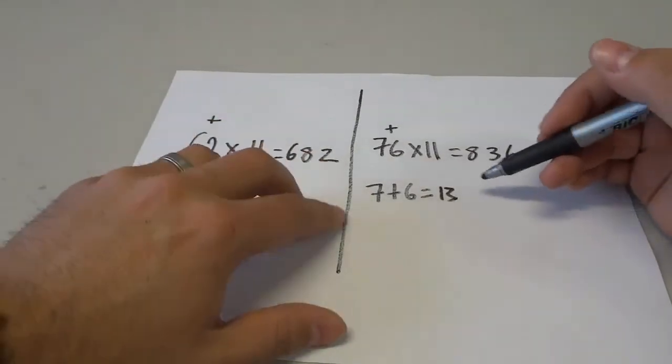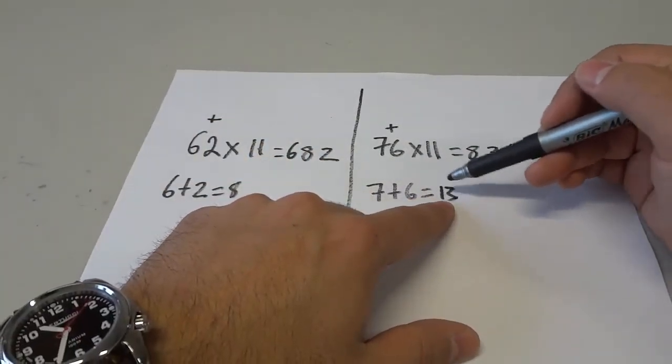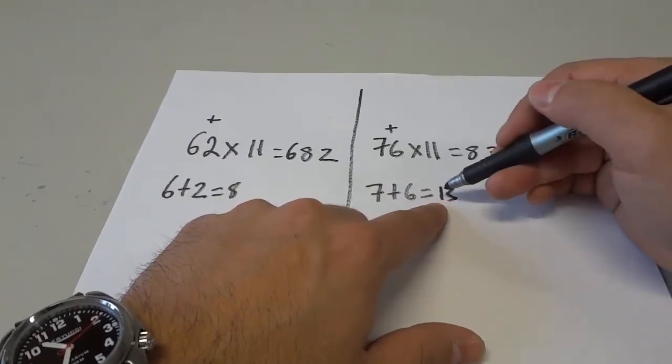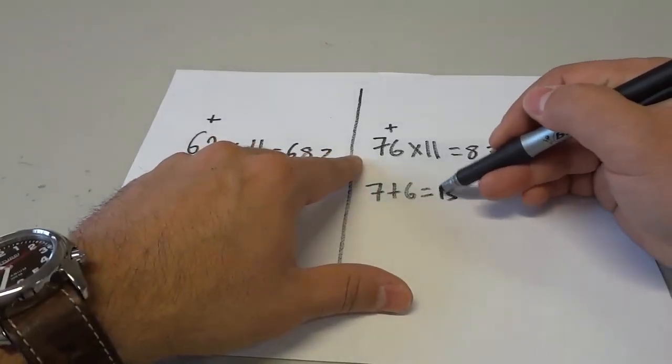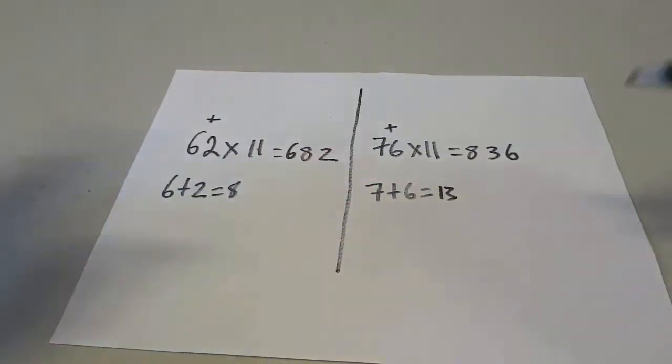So it's virtually the same thing when you have two digits as part of this answer. However, all that you have to do is take this digit right here and you add it to this digit over here. It's literally that simple.